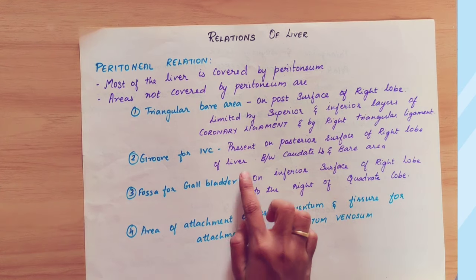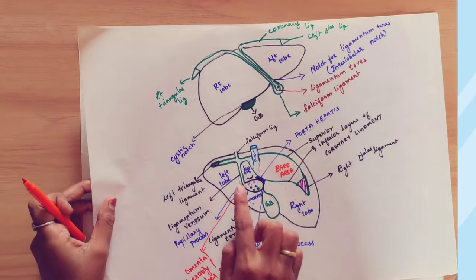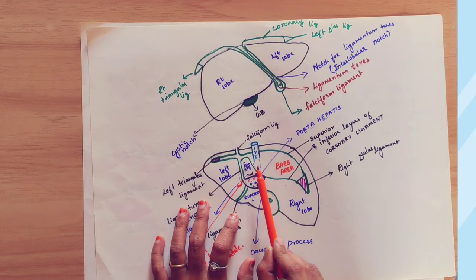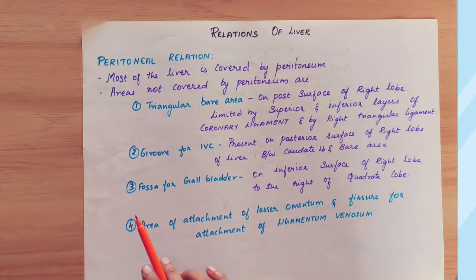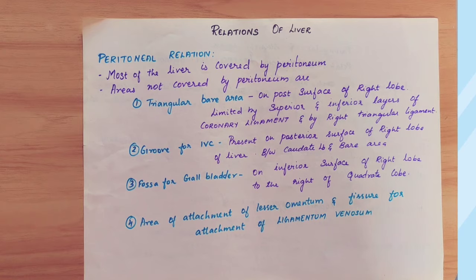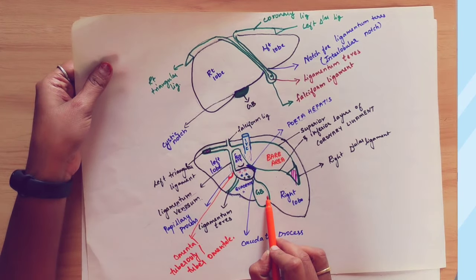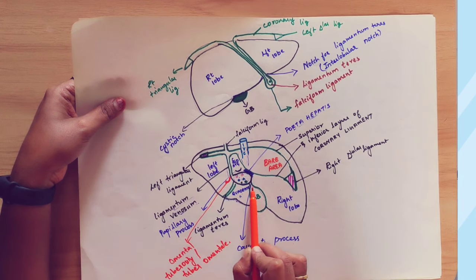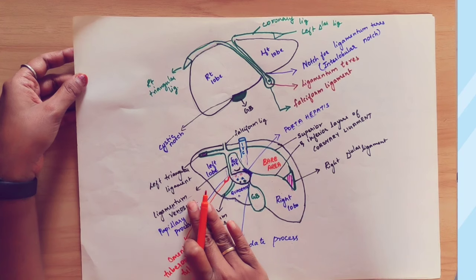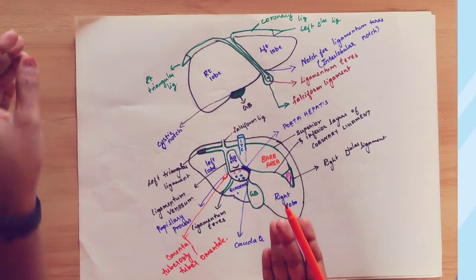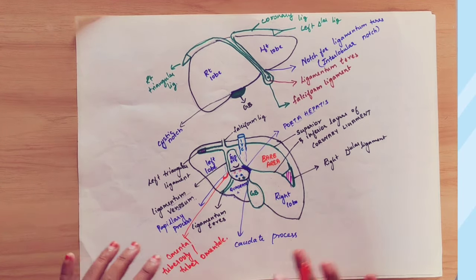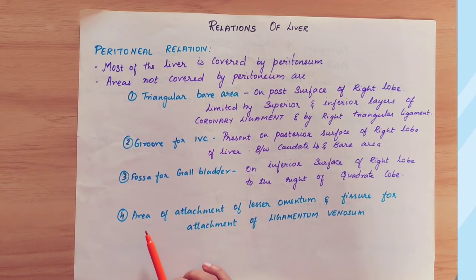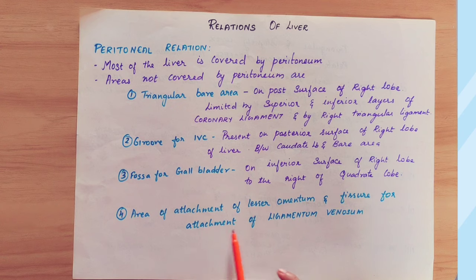The groove for IVC is present on the posterior surface of the right lobe, between the caudate lobe and the bare area. This groove is not covered by peritoneum. Third is the fossa for the gallbladder — the gallbladder is on the inferior surface of the right lobe, to the right of the caudate lobe, and the peritoneum does not cover it where it is in direct contact with the liver.